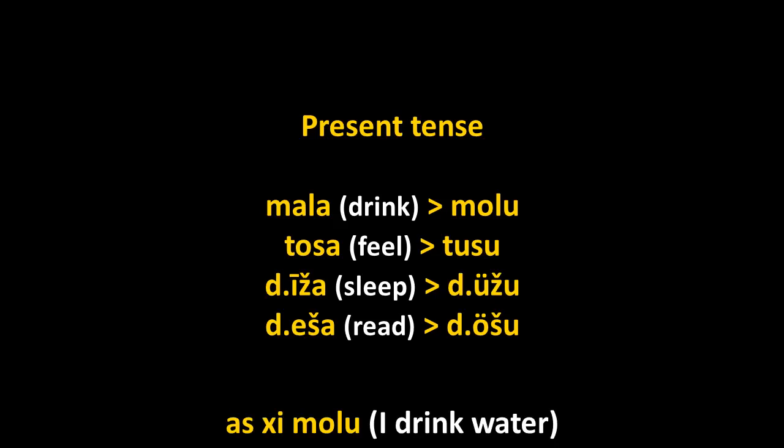If you say 'I drink water': as he molu. As is the ergative form of 'I,' he is 'water,' and molu is the present tense of 'to drink.'